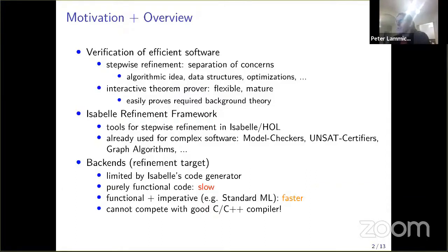However, the standard ML compiler or Haskell compiler cannot compete with a good C or C++ compiler. Even if we write the same algorithm in ML, it will still be slower than the same algorithm written in C or C++ and compiled with a state of the art compiler.